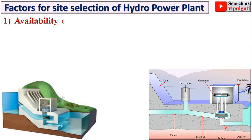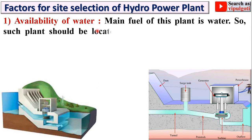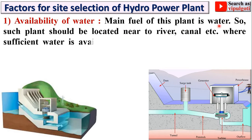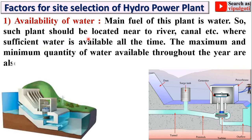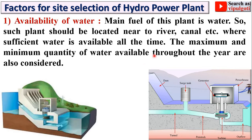The first point is availability of water. Water is the main fuel of a hydropower plant. Such a plant should be located near a river, canal, etc., where sufficient water is available all the time. That is the main point to be considered for site selection. The maximum and minimum quantity of water available throughout the year are also considered, because based on that you can decide the power plant capacity.